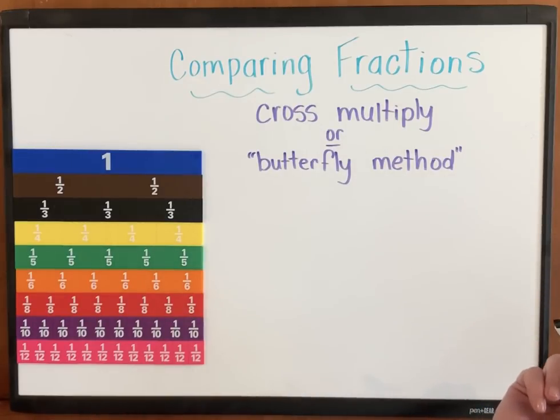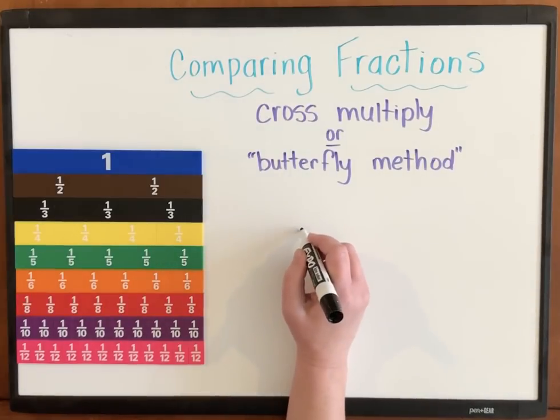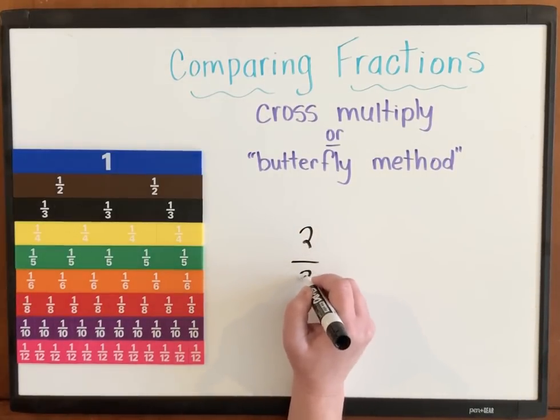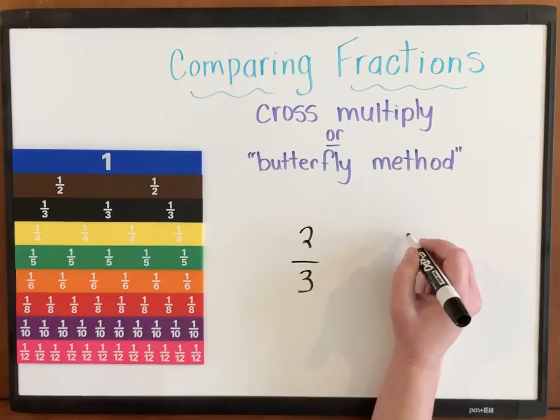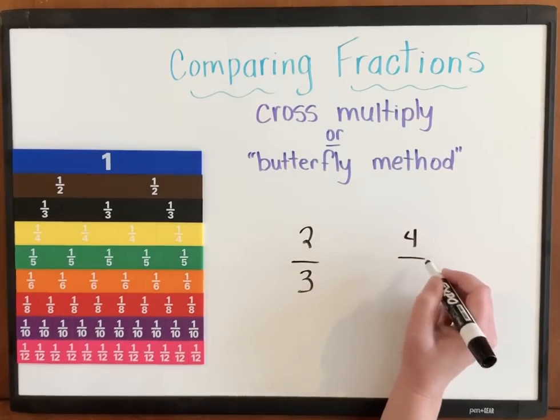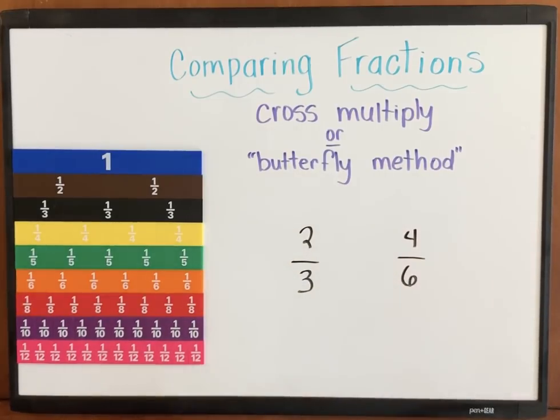Let's write down two fractions that we want to compare. Say I have the fraction 2/3 and I want to compare it to 4/6. Now this strategy gets its name, butterfly method, by cross multiplying.